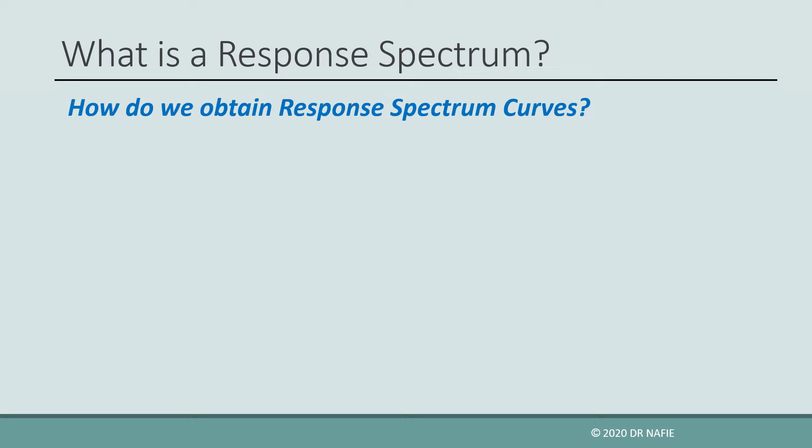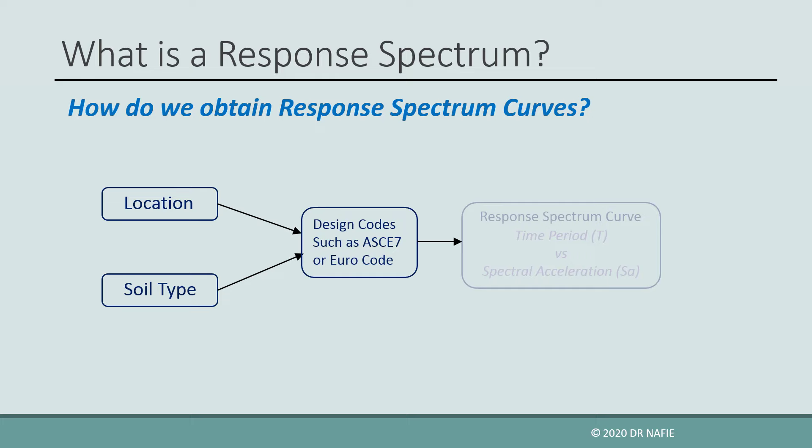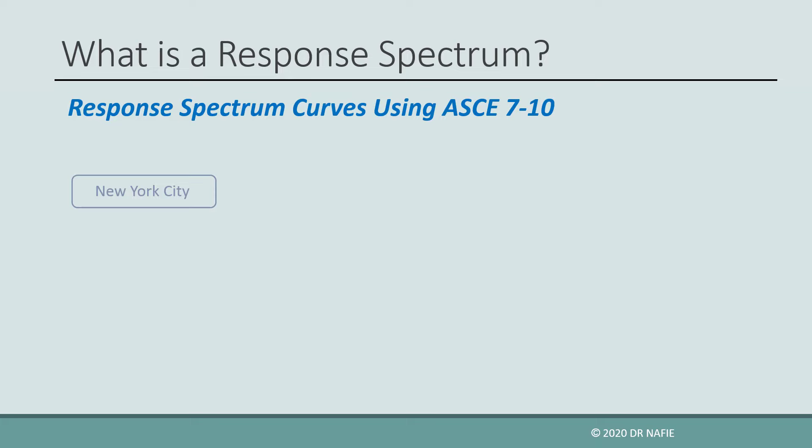So how do we obtain the response spectrum curves in practice? Do we need each time to analyze the structure for different earthquakes and find the envelope response spectrum? In the majority of cases, we don't need to do that. If we know the location of the building and the type of the soil, we can use one of the national codes, such as ASCE 7 or the Eurocode, to draw the design response spectrum curve using simple equations. For example, if we are designing a building in New York City and the building is founded on very dense sand, which is soil type C, we can easily draw the design response spectrum curve using ASCE 7-10.